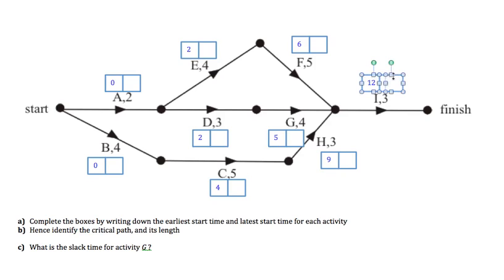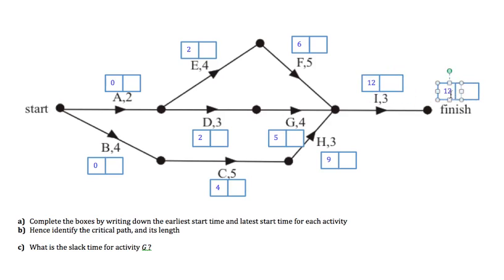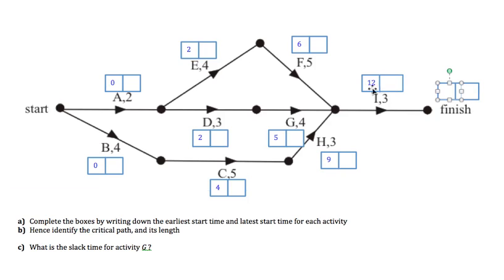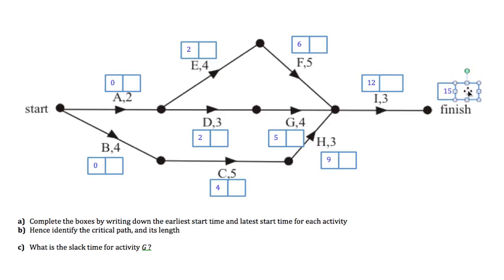It's a good idea to put boxes next to the finish as well, so that we can start working backwards. I can start at 12 and it takes three, so the earliest finish time for the whole project is going to be 15. That's the value we're going to use to work backwards to get our latest starting times — we want to figure out the latest time each activity can start without delaying the overall time beyond 15.